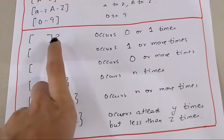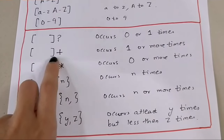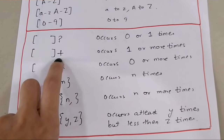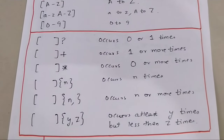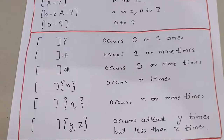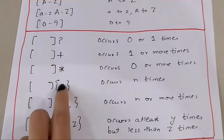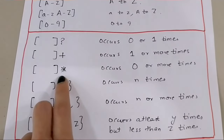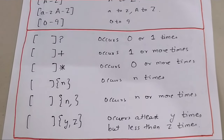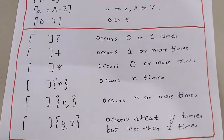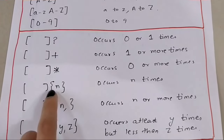When there is a plus sign, it means it will occur one or more times — so at least one time it has to occur. When there is an asterisk, it means it should occur zero or more number of times — so it may not occur at all, or it can occur any number of times.